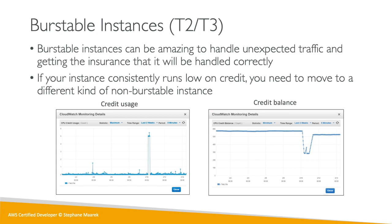To see the credit usage and balance, you can use CloudWatch. When the CPU skyrockets, you can see that the credit usage is very high and the credit balance goes down. After the CPU credit usage is done and we're not using it anymore, we slowly gain back our credit balance to a normal zone. You have to be careful and monitor the credit usage and balance over time, otherwise you may have surprises.